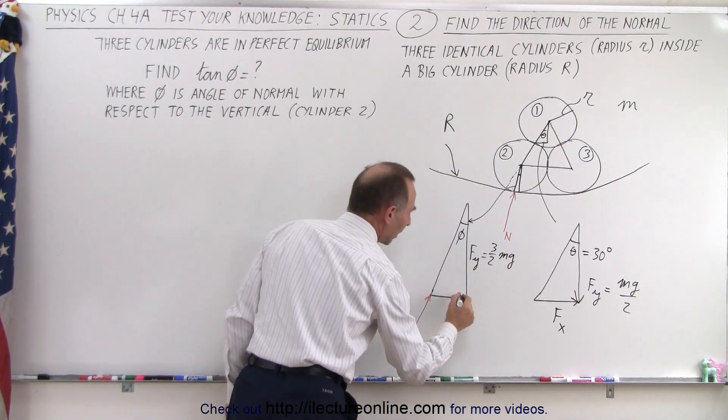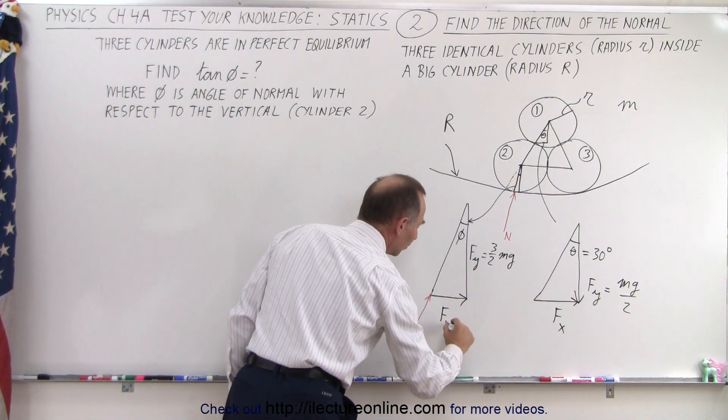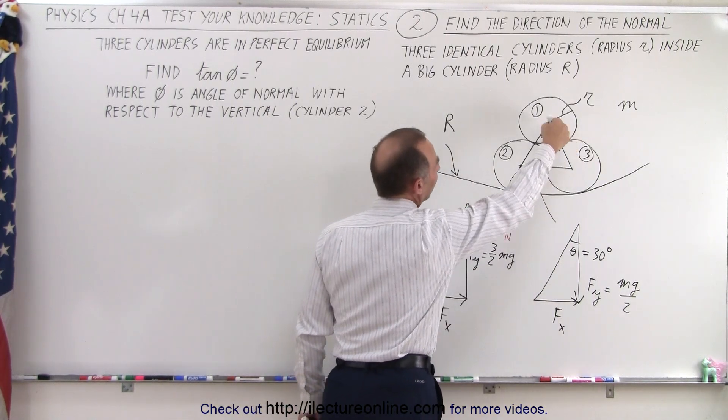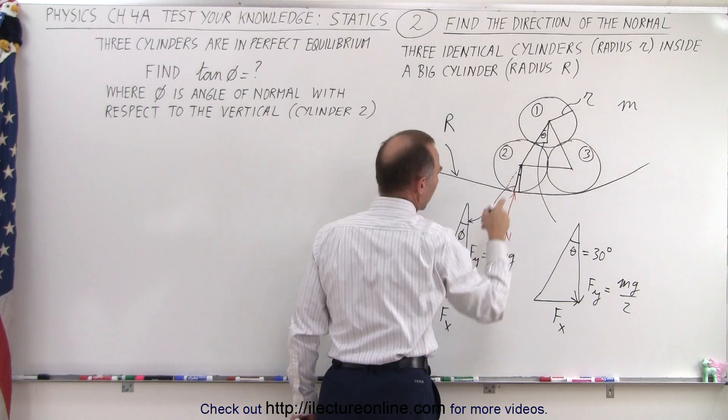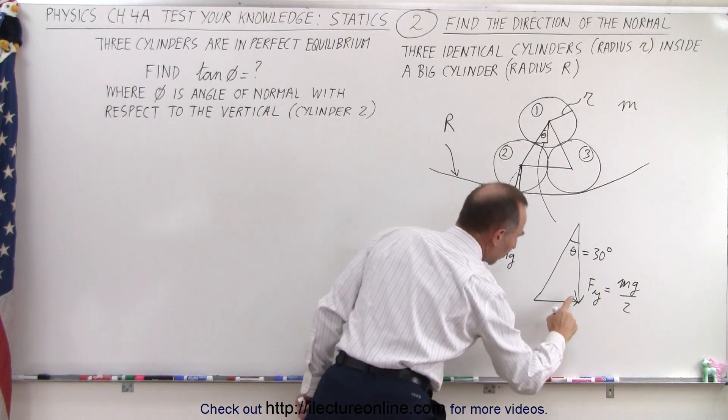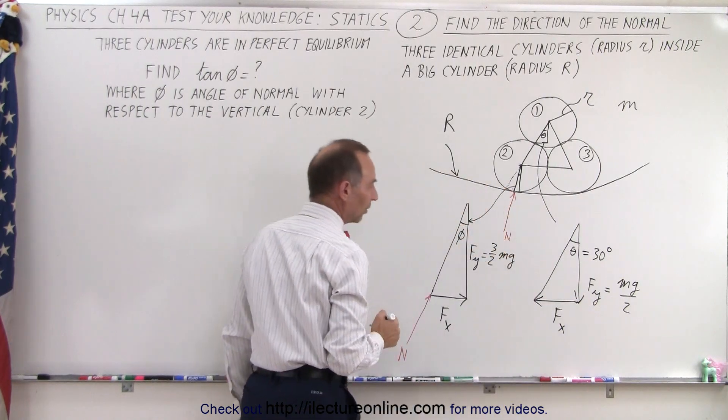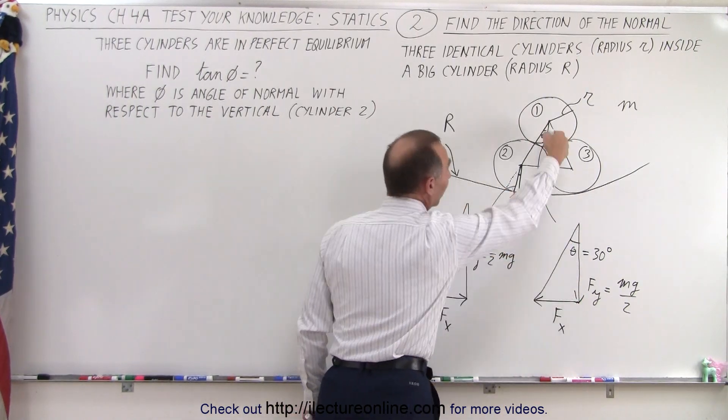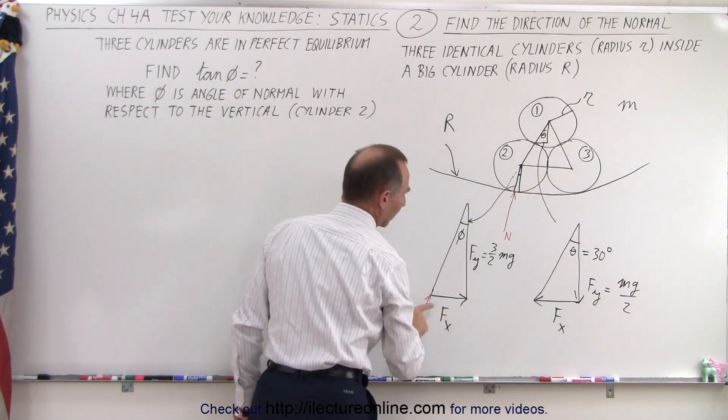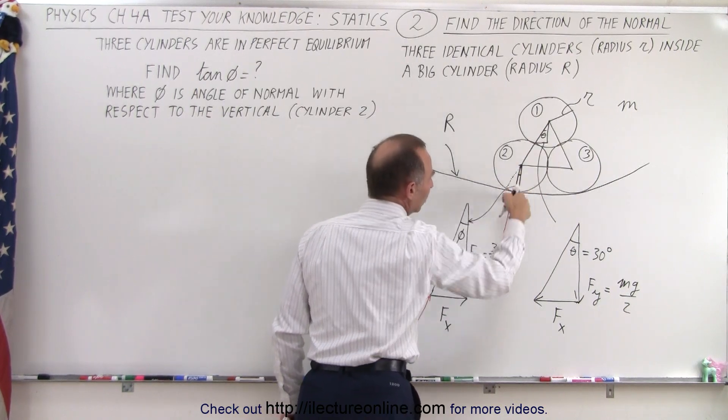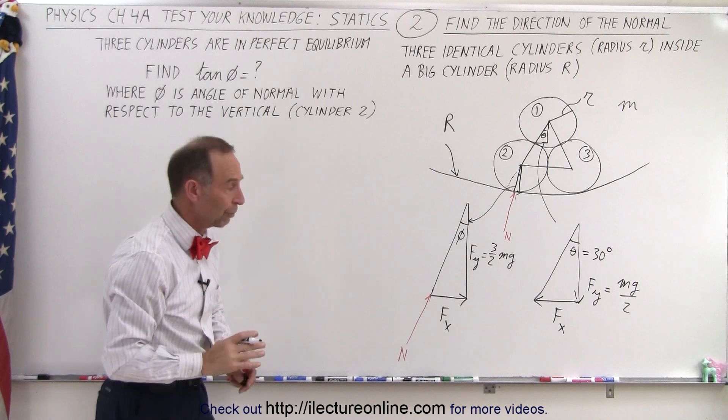And over here we have F sub X, which is the same F sub X that's what we have over here. So basically, this weight is pushing this way here, and here the normal has to push back. So what I probably should do is put the arrow this way, so that the F sub X of the top pushes back on the F sub X at the bottom here. And these two must be equal to each other to keep everything at perfect equilibrium.